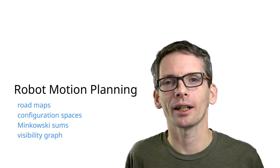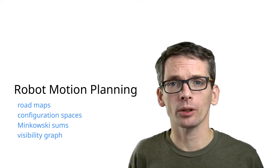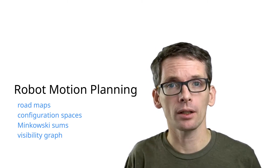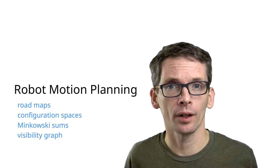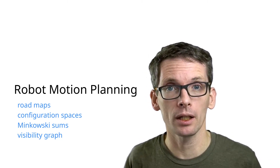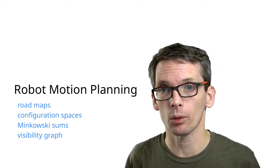Welcome! Today we're going to look at robot motion planning. Two important concepts are roadmaps and configuration spaces, and we'll have a look at those first. Then in terms of computing configuration spaces, we're going to look at Minkowski sums and how to compute them and their union. And finally for shortest path, we're going to look at visibility graphs and an algorithm for computing the visibility graph.